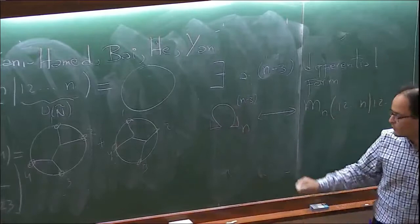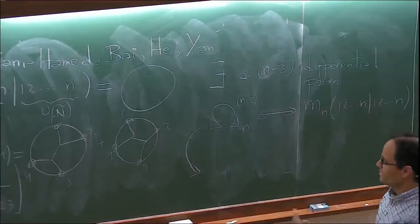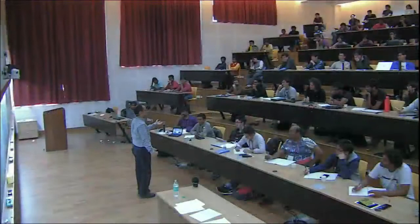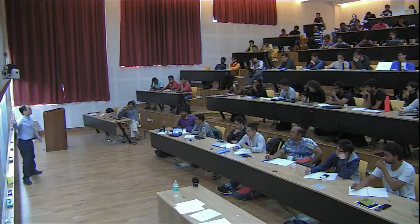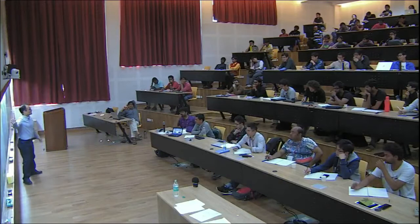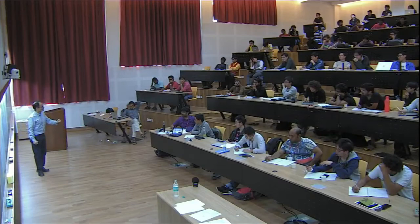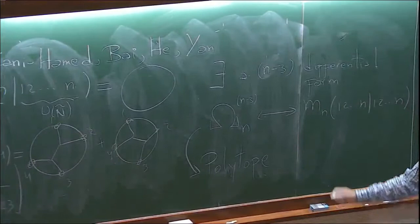Not only that — this differential form gives you the way to relate this collection of Feynman diagrams to a geometric object. What is Nima Arkani-Hamed obsessed about? Cosmological polytopes. Almost everything is a polytope. And these amplitudes — this collection of Feynman diagrams — compute nothing but the volume of a polytope. A very famous one from combinatorics, called the associahedron.